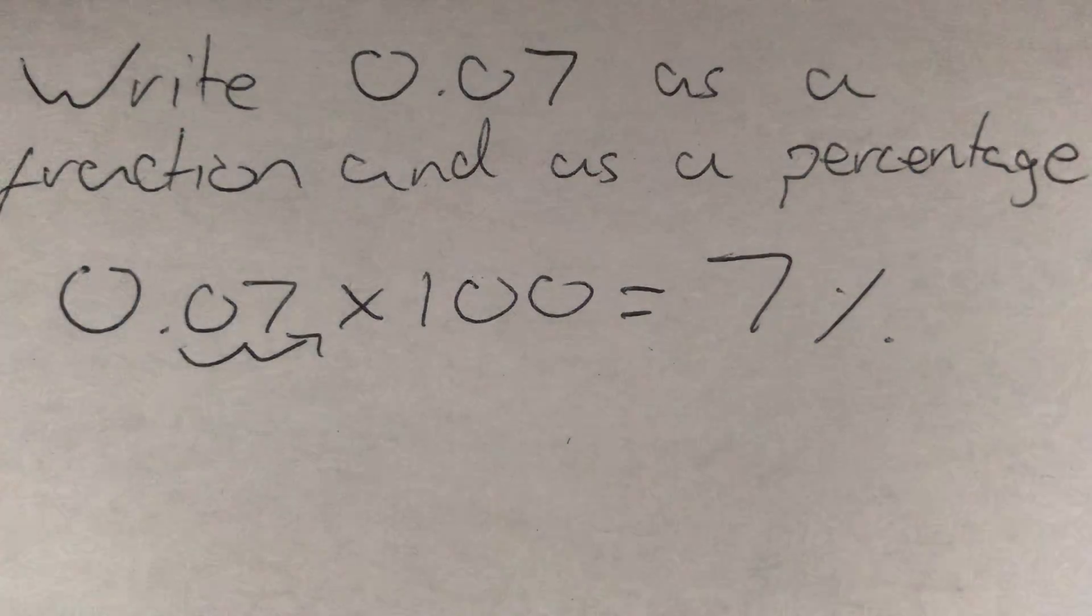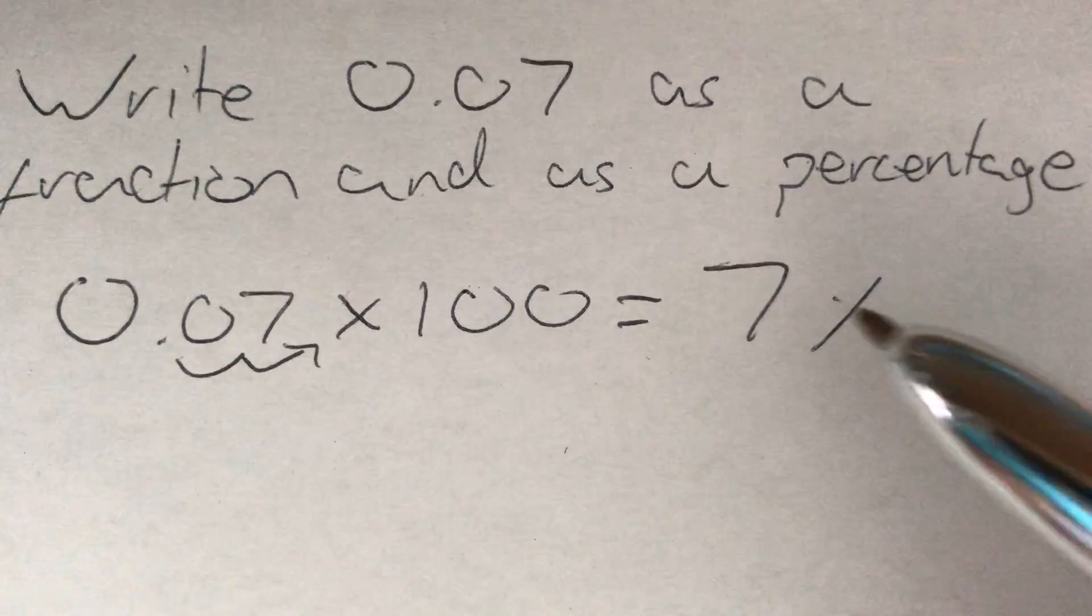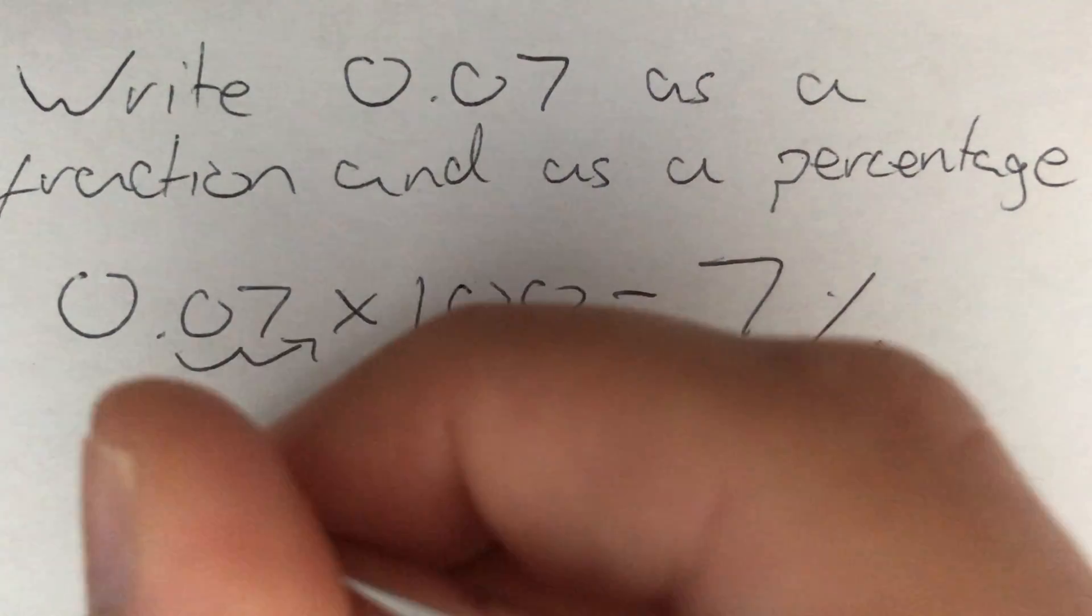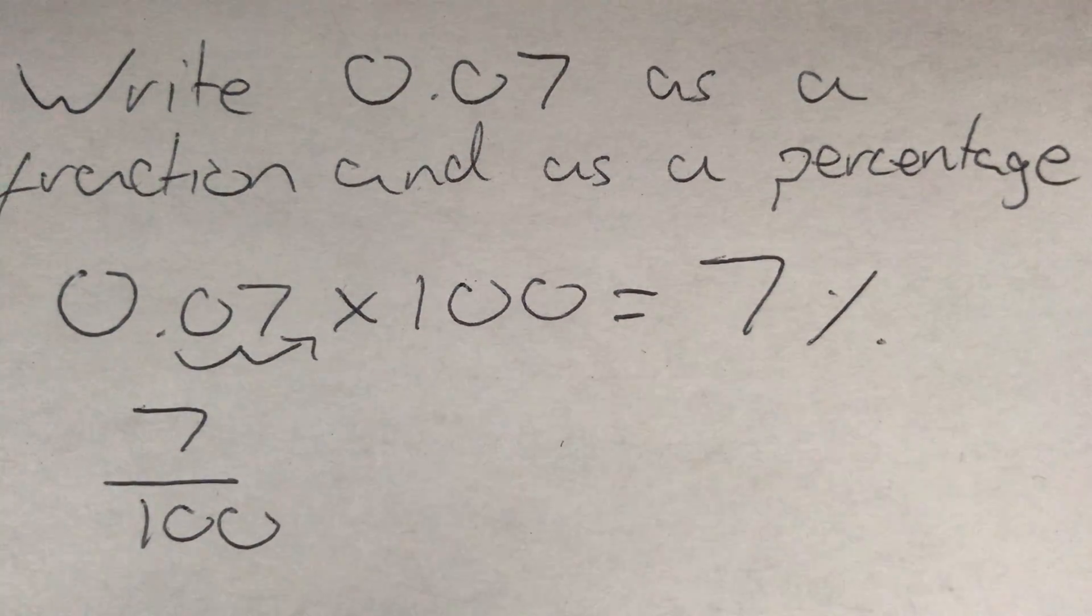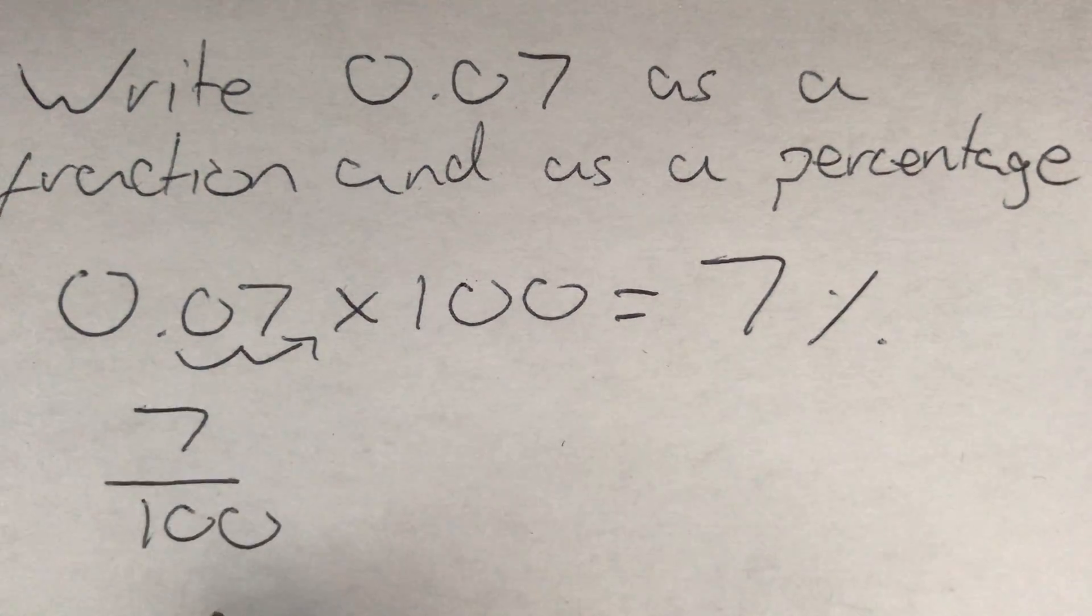Now, percent, of course, means out of 100. So this 7% just means 7 out of 100. And we can write that simply as a fraction, 7 out of 100, 7 over 100.